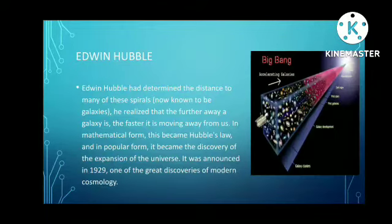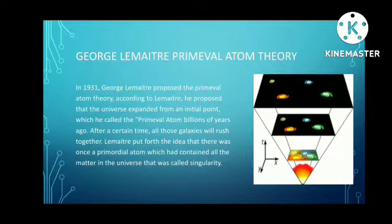Two years after the discovery of Edwin Hubble, George Lemaître proposed the primeval atom in 1931. According to Lemaître's primeval atom theory, he proposed that the universe expanded from an initial point, meaning the universe at the very beginning was very small — what he called the primeval atom — billions of years ago. Lemaître put forth the idea that this primordial or primeval atom contained all the matter in the universe, which was called singularity.